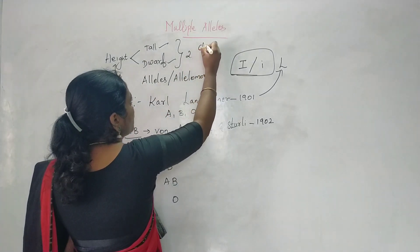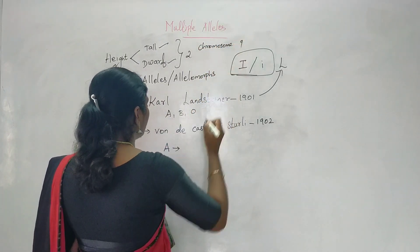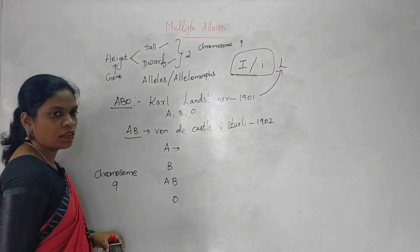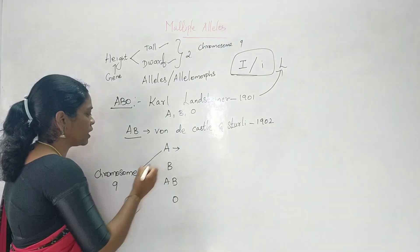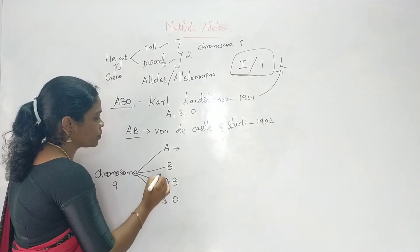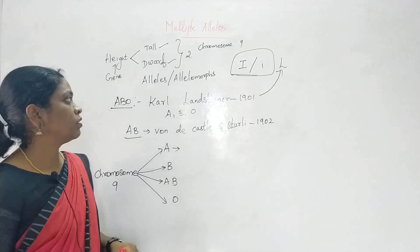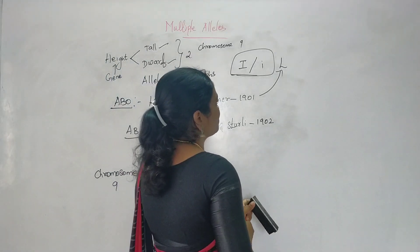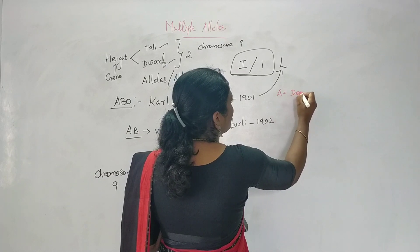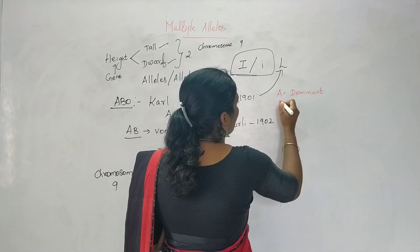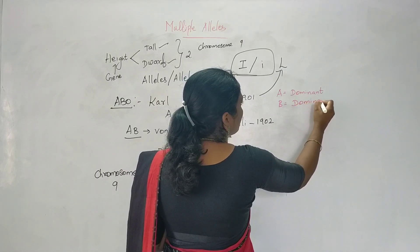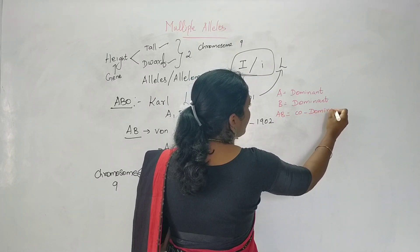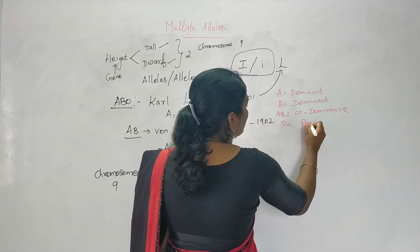Chromosome number 9 carries the genes for blood groups. There are four different types of blood groups. Blood group A is dominant, B is also dominant, AB exhibits co-dominance, and O is recessive.